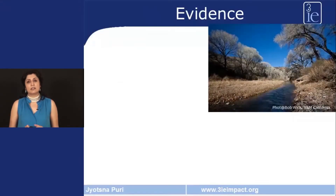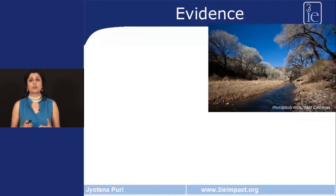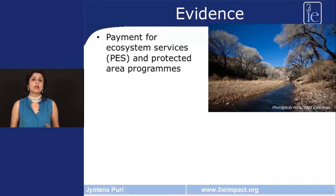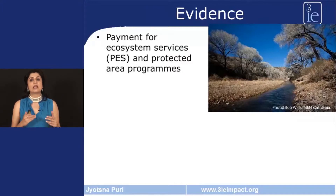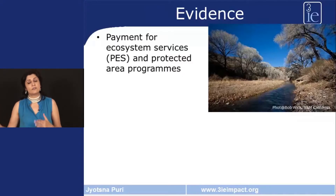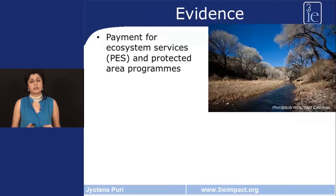If we look at the evidence in this area, we find some remarkable features. In this presentation, I will be talking about payment for ecosystem services programs and protected area programs. Payment for ecosystem services programs are programs that provide incentives in the form of payments to landowners to prevent deforestation. Protected area programs set up and demarcate protected areas so that they are not affected by automatic forest clearing activities.